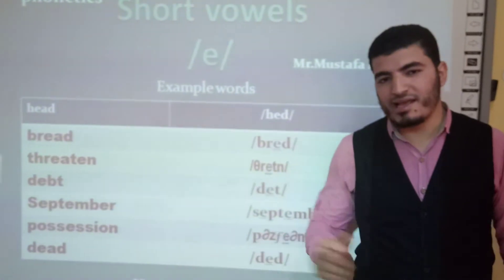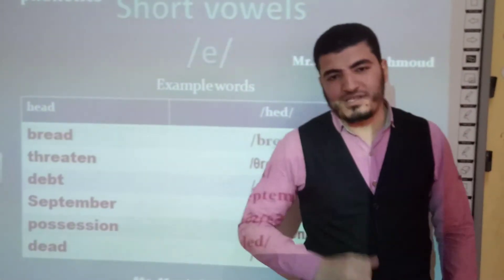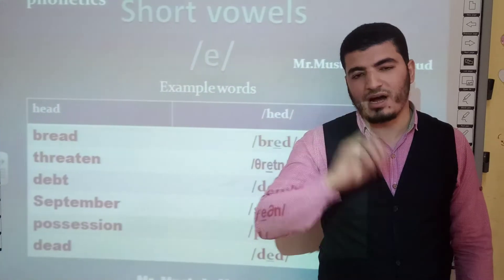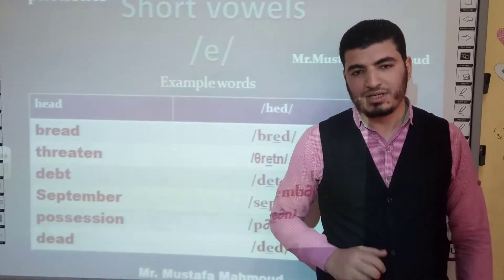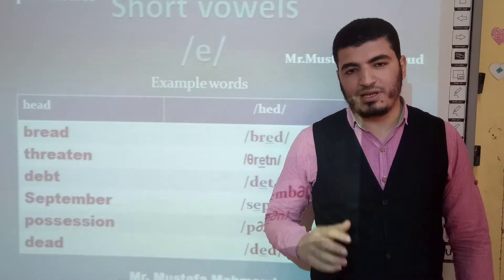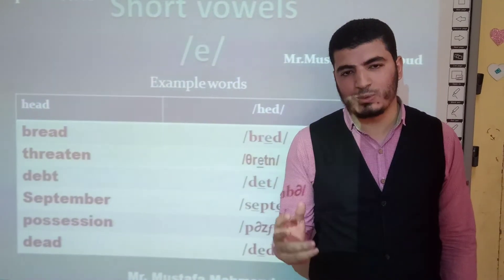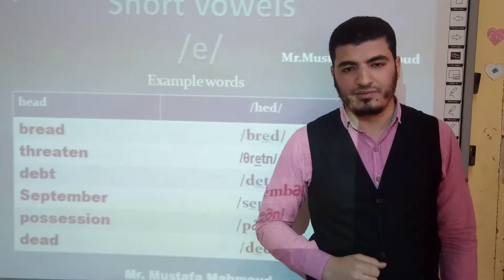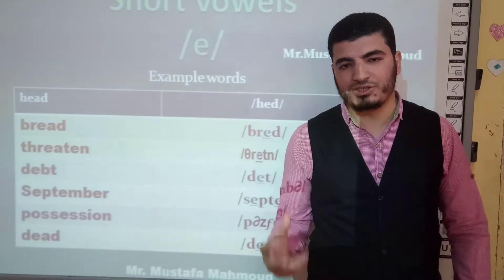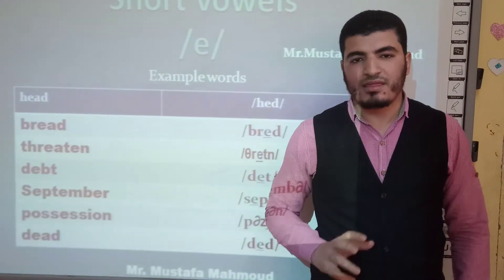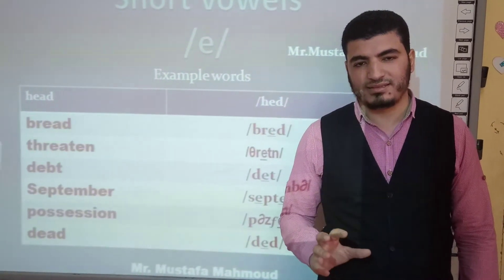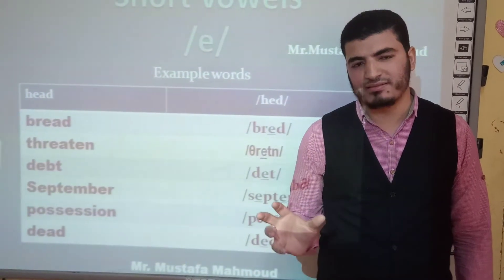For the production of this vowel: number one, the tongue in front is raised to the hard palate. Number two, the tongue is raised to a point midway between the half-closed and the half-open levels. Number three, the lips are the slightest spread in shape.